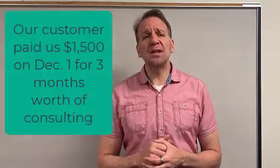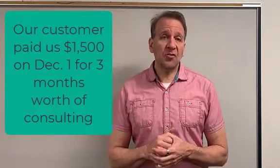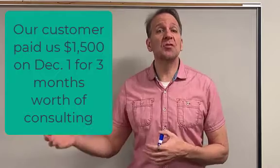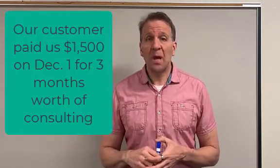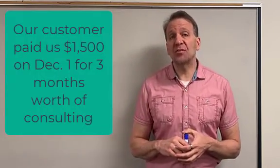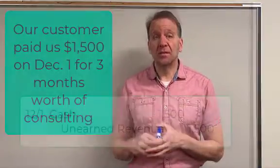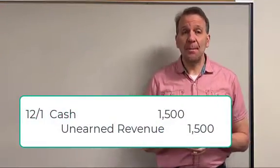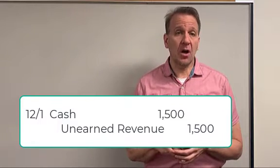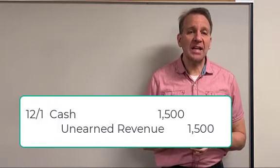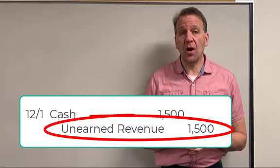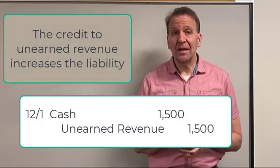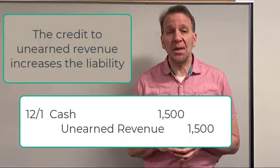Let's look at an example. Assume that on December 1st a customer paid us $1,500 to do some future consulting work. We haven't done the work yet, but they paid us up front for three months. In this journal entry, we have debited cash $1,500 and credited unearned revenue $1,500. That credit to unearned revenues is a liability — it has increased that liability because we have to do something in the future.